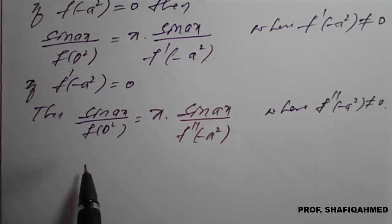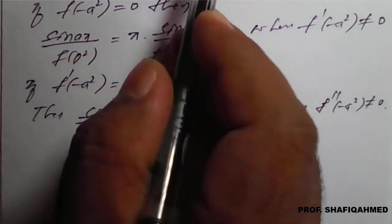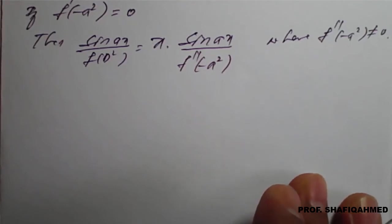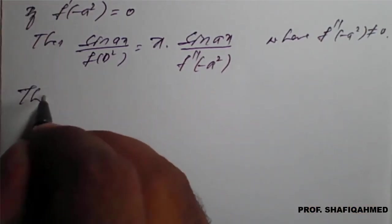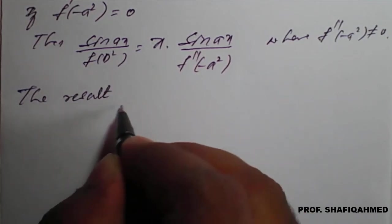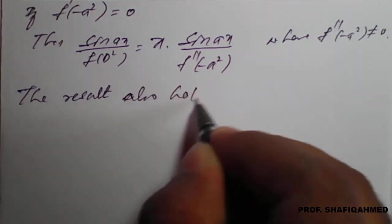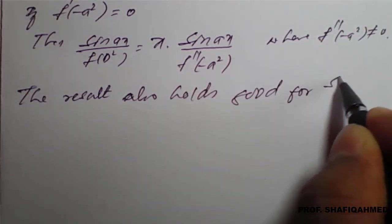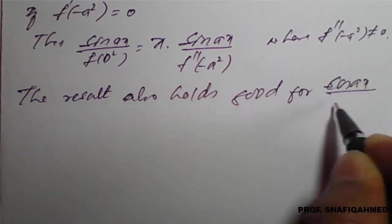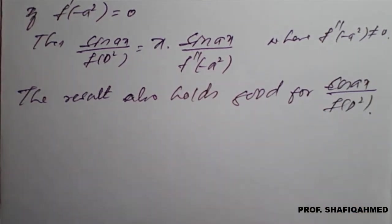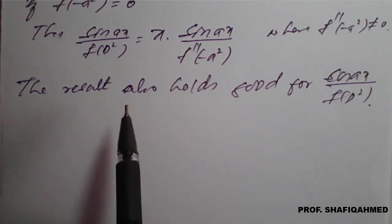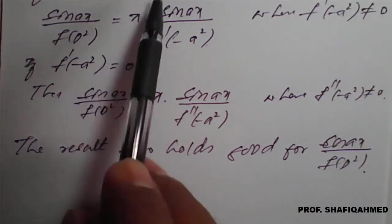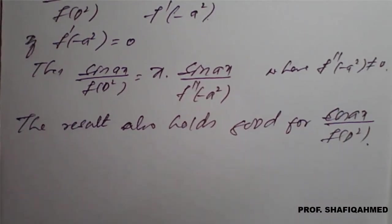A similar case applies for cos(ax) upon f(D²). The same results hold good for cos(ax) divided by f(D²) — whatever rules we have seen for sine, the same results will hold good for cos(ax) also.